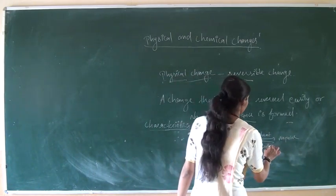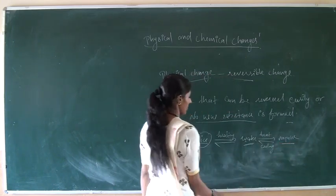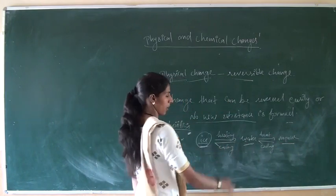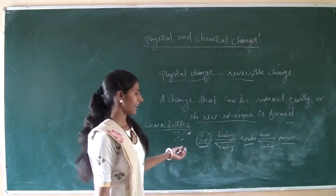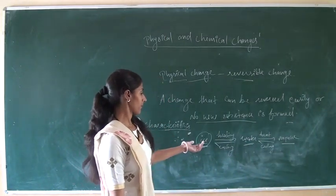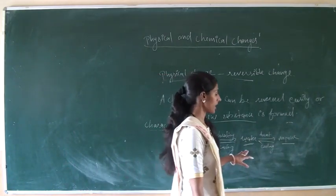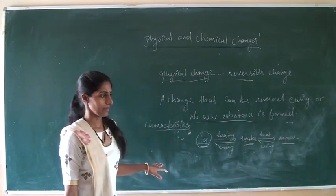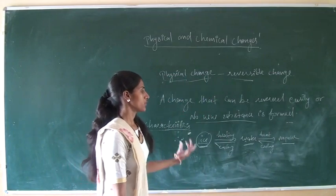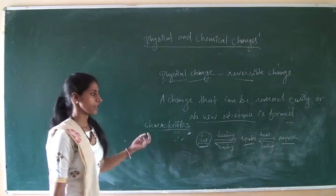When temperature is decreased — on cooling — we get water from water vapors, and on further cooling we get ice from water. This is our daily life example of physical change, in which we get many states of water: solid, liquid, or gaseous states. No new substance is formed in this type of change.